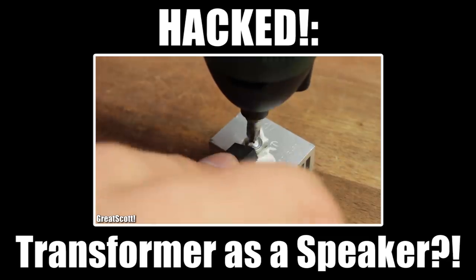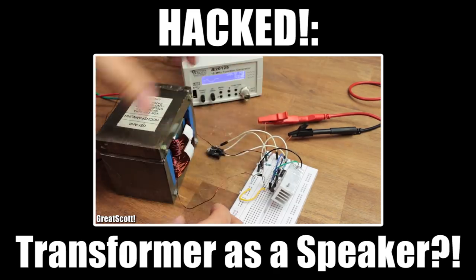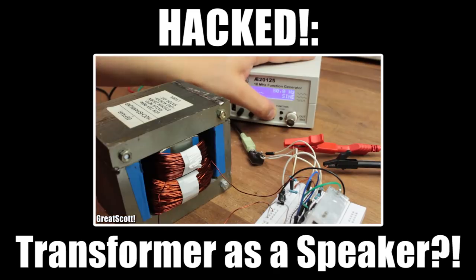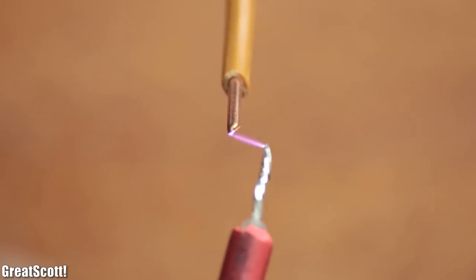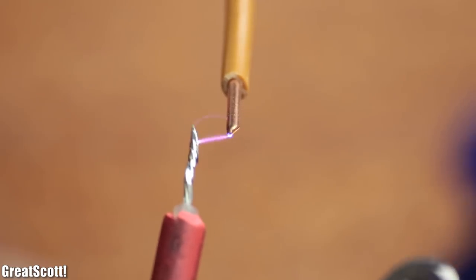In a previous video for example, I showed you how we can abuse a transformer in order to create audible music. But in this video we will go one step further by creating a lethal plasma arc, which as you can hear can also produce hearable sounds.